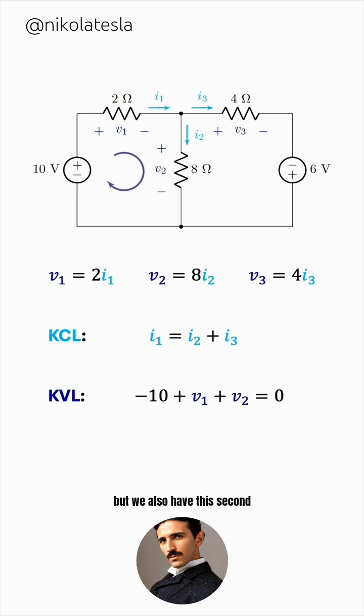But we also have this second loop to apply KVL on. This gives us negative V2 plus V3 minus 6 equals 0. Let's take the negative 10 to the other side in this first equation. And we can also do the same thing for the second one. We'll take the negative 6 to the other side.